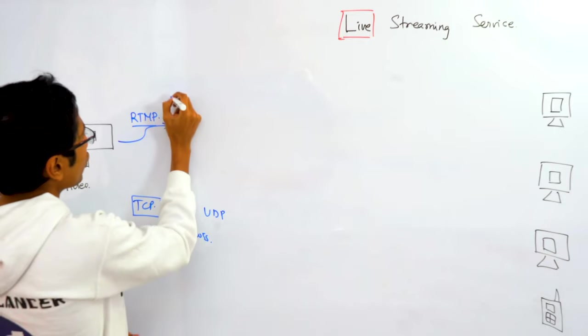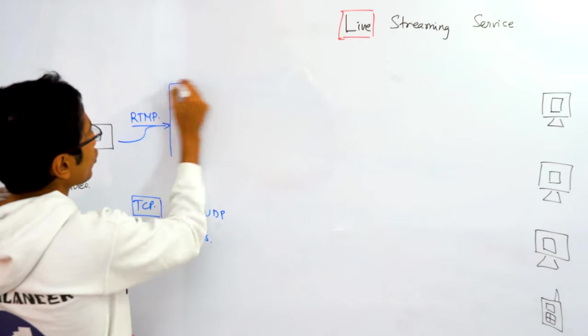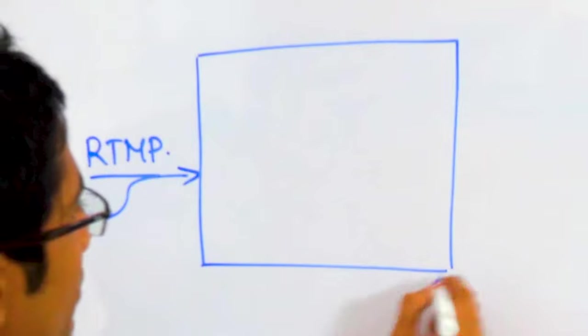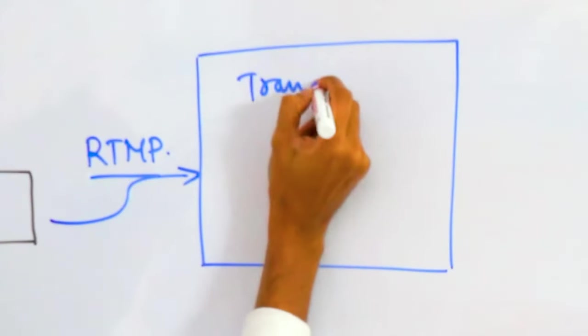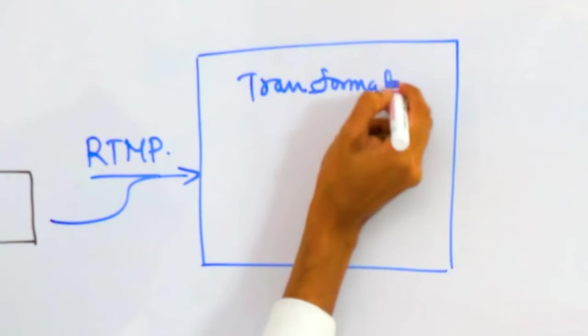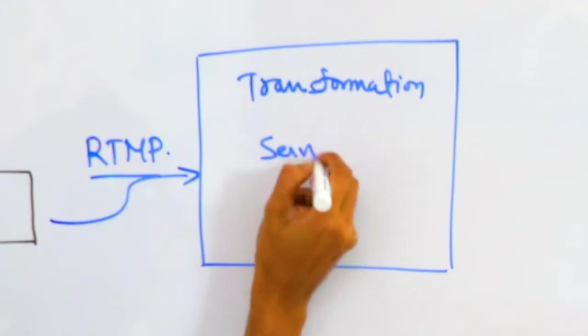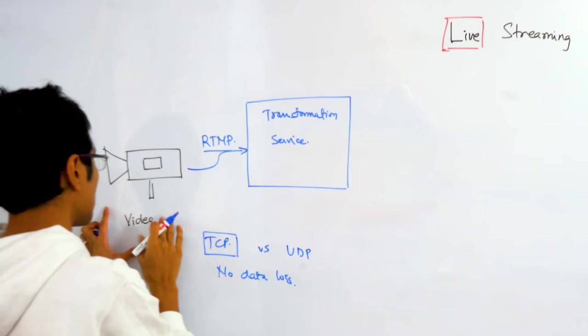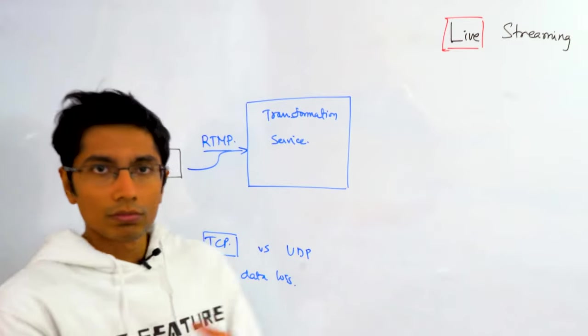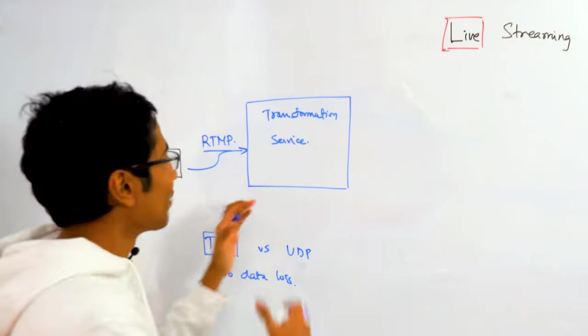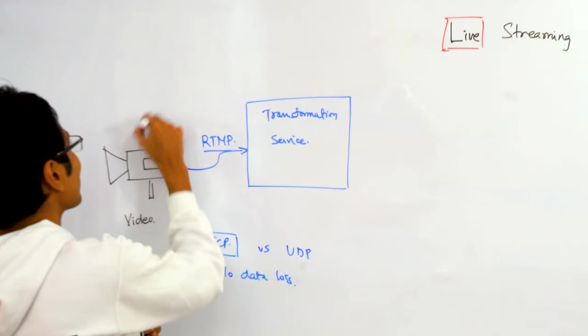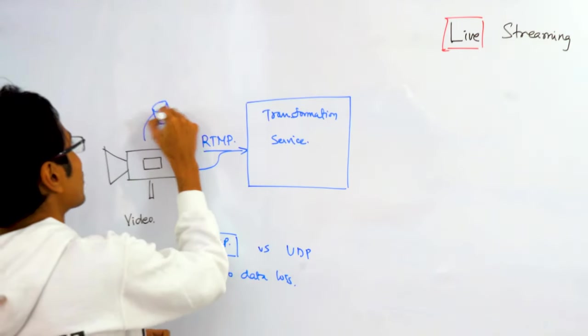So this gives you a video stream into your server side systems and over here you need to do the transformation. So let's say there is a transformation service that we have. The original video, let us assume, is being backed up in multiple stores over here just in case you have a disaster. You would be storing it in some databases so that's trivial.